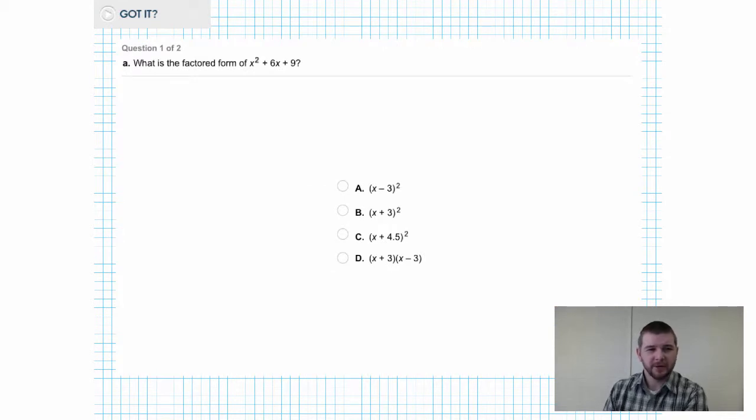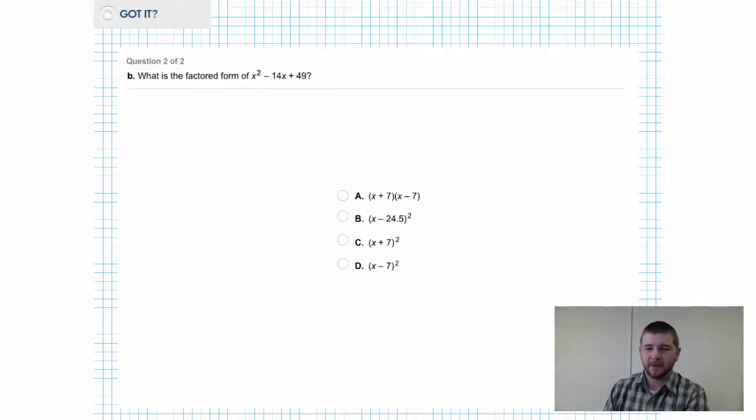And your first opportunity to show that you have got it in this section: what is the factored form of x² + 6x + 9? Work carefully and make your selection from the choices below. And your second got it question from this section: what is the factored form of x² - 14x + 49? Work carefully and make your selection from the choices below.